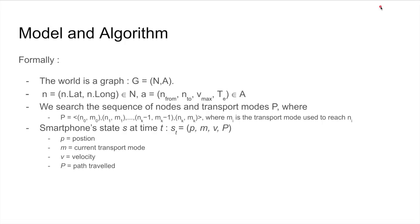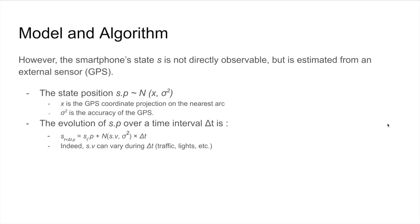More formally, we define our problem as follows: The world, which is the underlying road network, is defined as a graph where each node is an intersection defined by its longitude and latitude, and each arc is the actual roads that link the intersection with a maximal speed allowed on it and the transport mode allowed on it too. We search for the sequence of nodes and transport modes p, where p is defined as tuples representing the transport mode used to reach each n node. The state of the smartphone is defined as follows: we have p, which is the current position; m, the current transport mode; v, its velocity; and p_t, its path traveled until this moment.